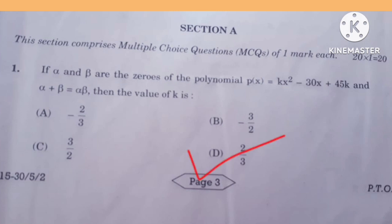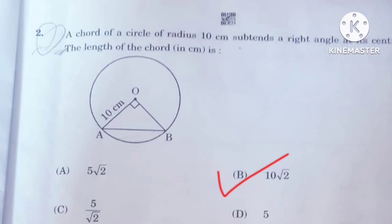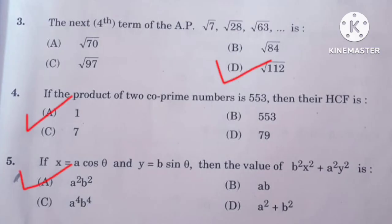So MCQs, question number 1, answer is D. Question number 2, B. Question number 3 is D. 4 is A, and 5 is A.